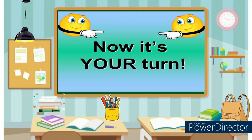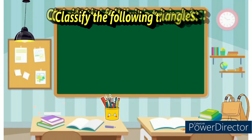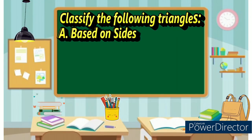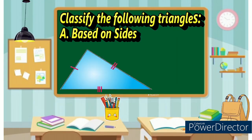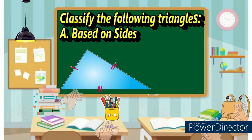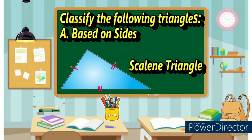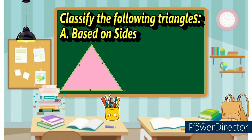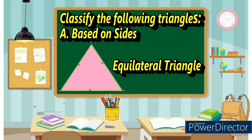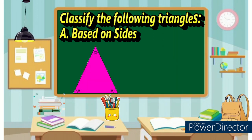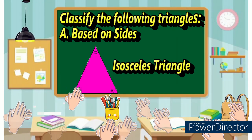Now it's your turn. Classify the following triangles based on sides. Number one: correct, scalene triangle. Number two: that's right, equilateral triangle. Then number three: isosceles triangle. Very good.